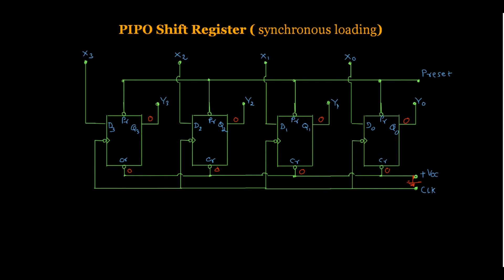Then remove the ground and apply VCC to the clear input, so it becomes 1. The preset is also connected to VCC, so preset is also 1. We know that in a flip-flop, when the preset is high and the clear input is high, then we have a normal operation of the flip-flop.